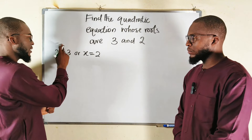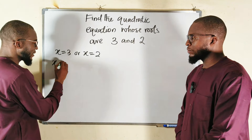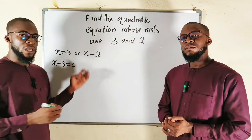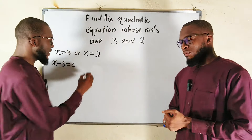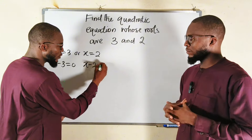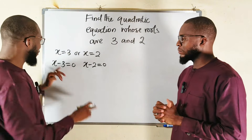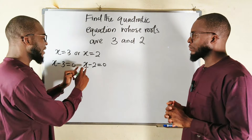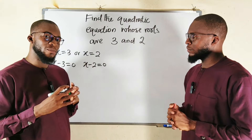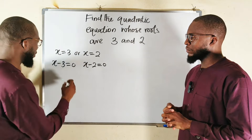And we can transform these roots into factors. If you take 3 inside, it becomes negative, right? So we have x minus 3, and this will be equal to 0. You do the same thing here: you have x minus 2 equal to 0. Now we have two factors, x minus 3 and x minus 2. Once you multiply them together, you're going to obtain that quadratic equation.